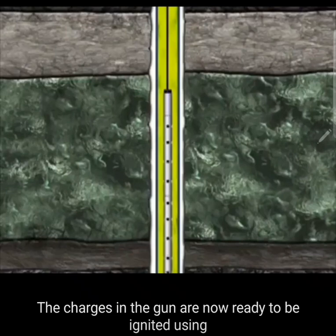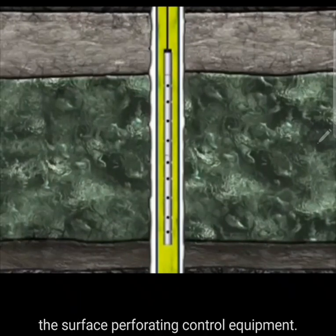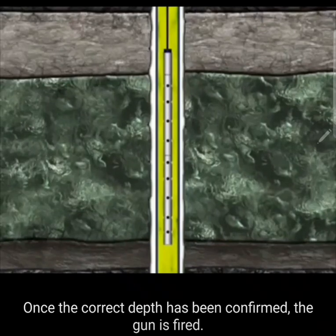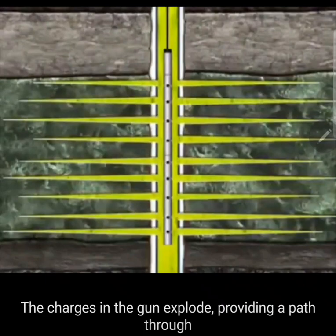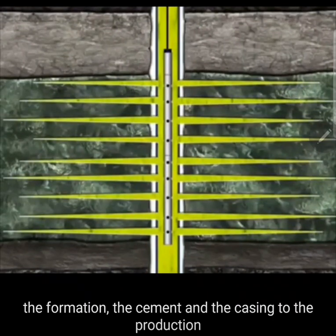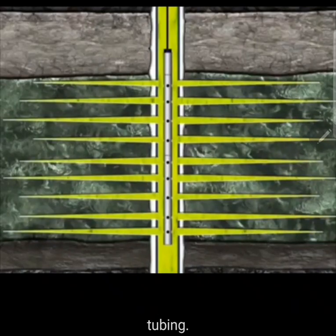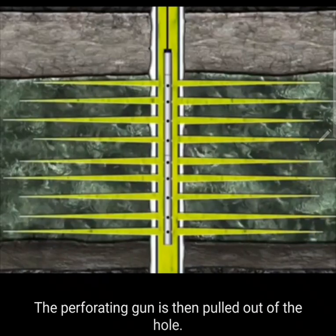The charges in the gun are now ready to be ignited using the surface perforating control equipment. Once the correct depth has been confirmed, the gun is fired. The charges in the gun explode, providing a path through the formation, the cement, and the casing to the production tubing. The perforating gun is then pulled out of the hole.